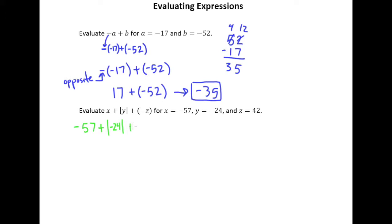And then plus negative z. So this negative needs to come straight down from the expression. And so I'm leaving a blank spot where z was and then I know z is supposed to be 42, so I'm going to put that right where z used to be.